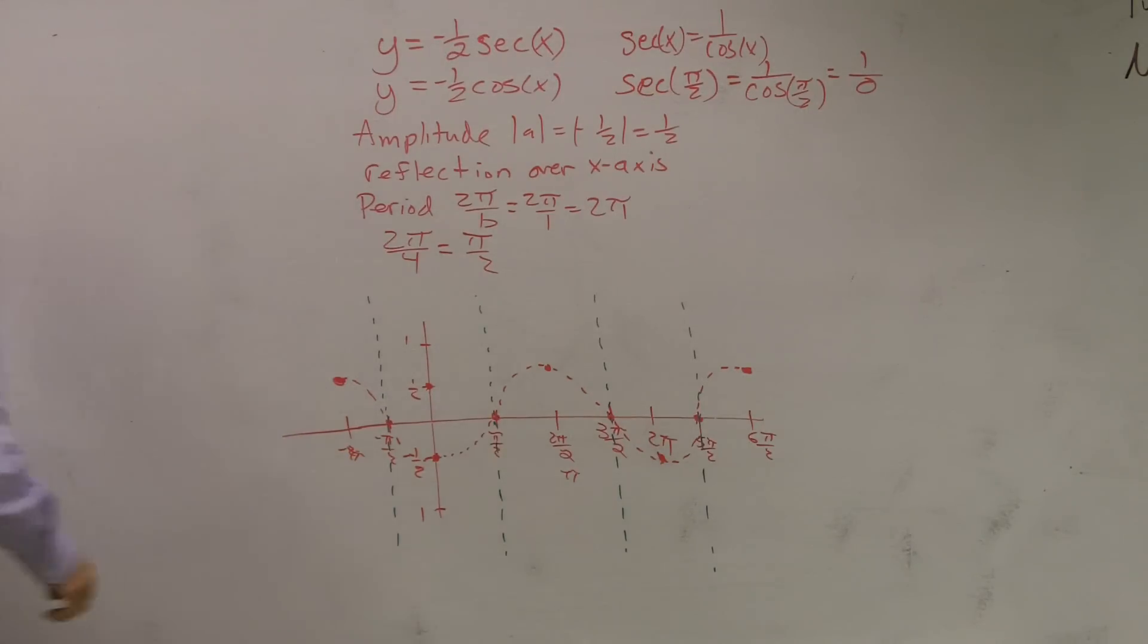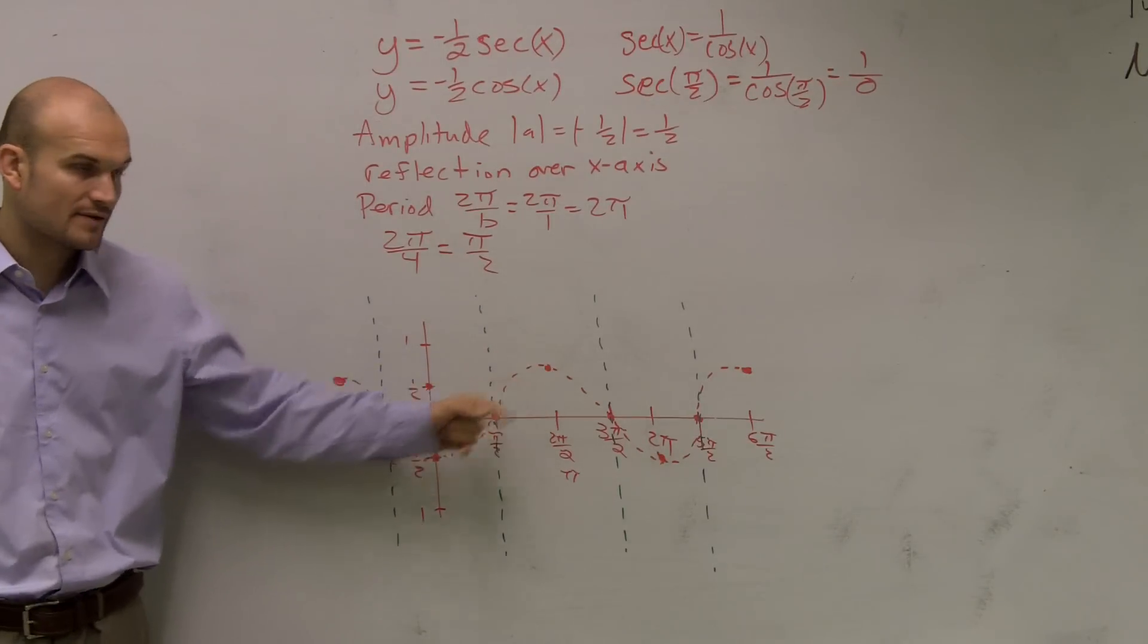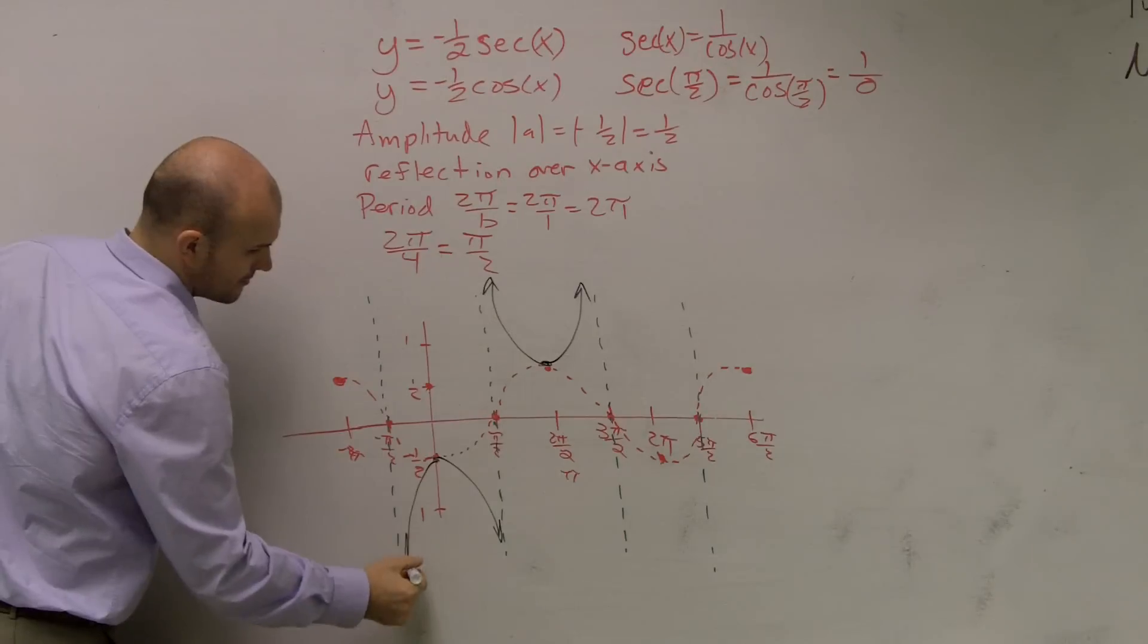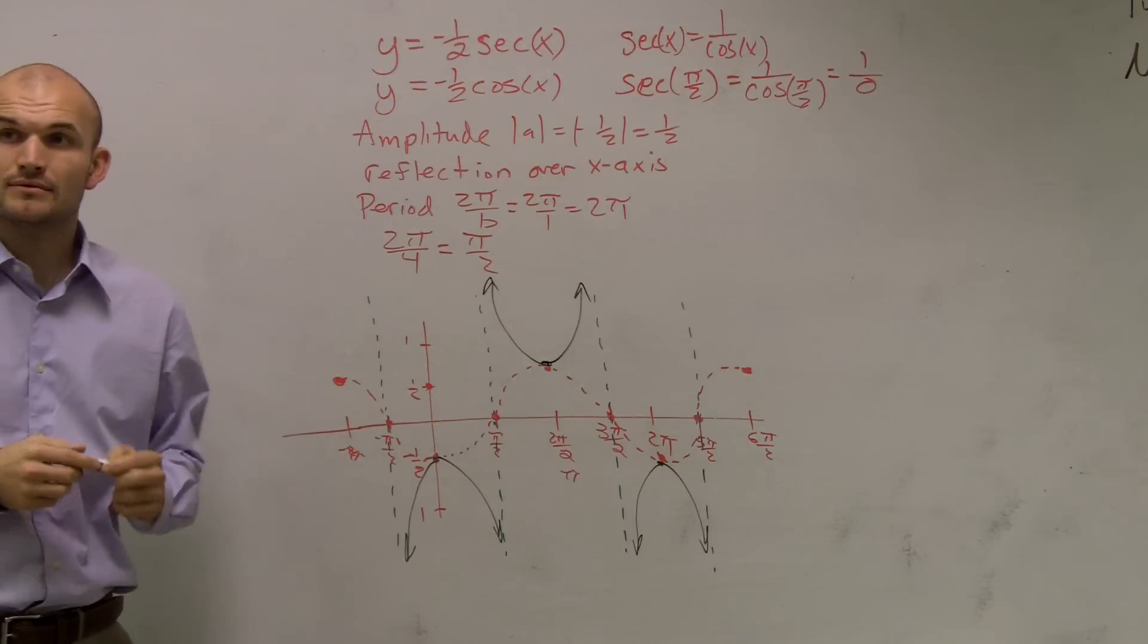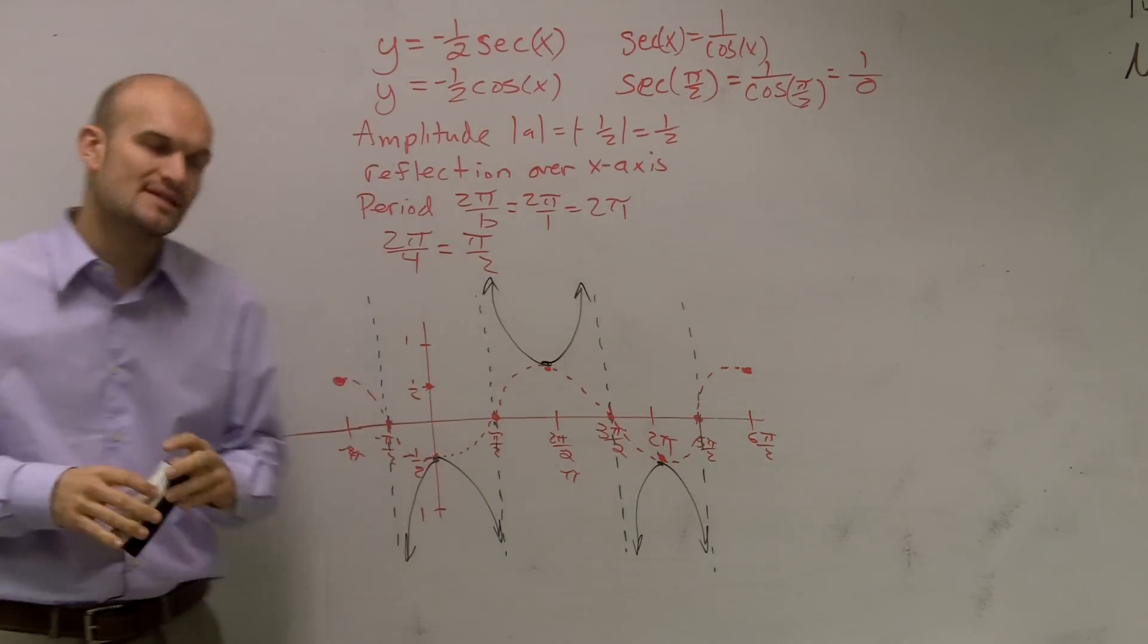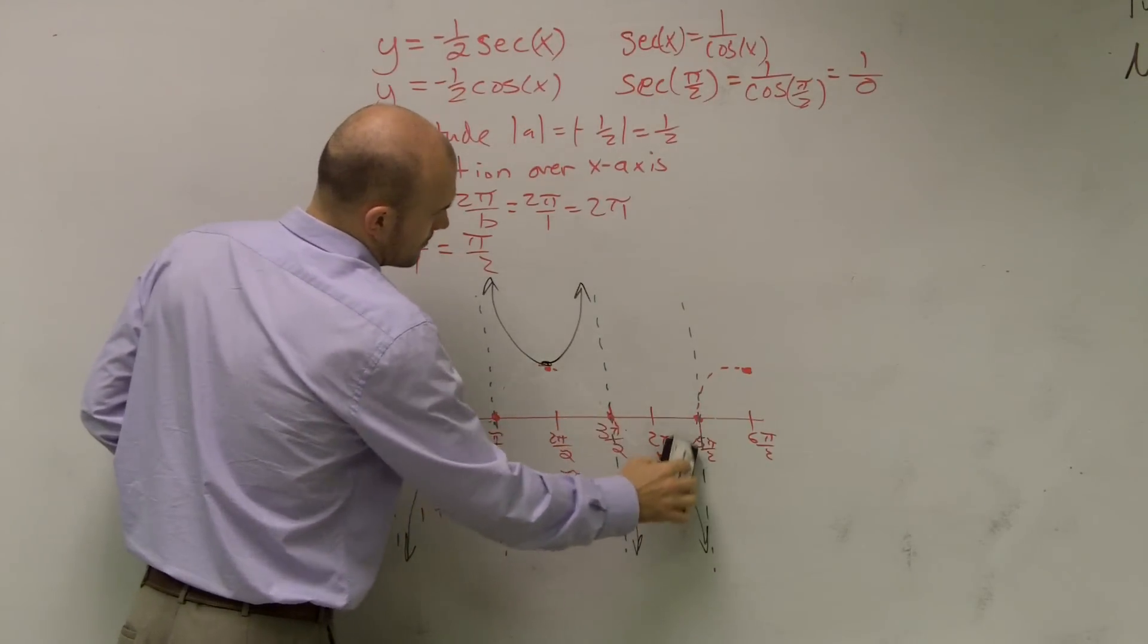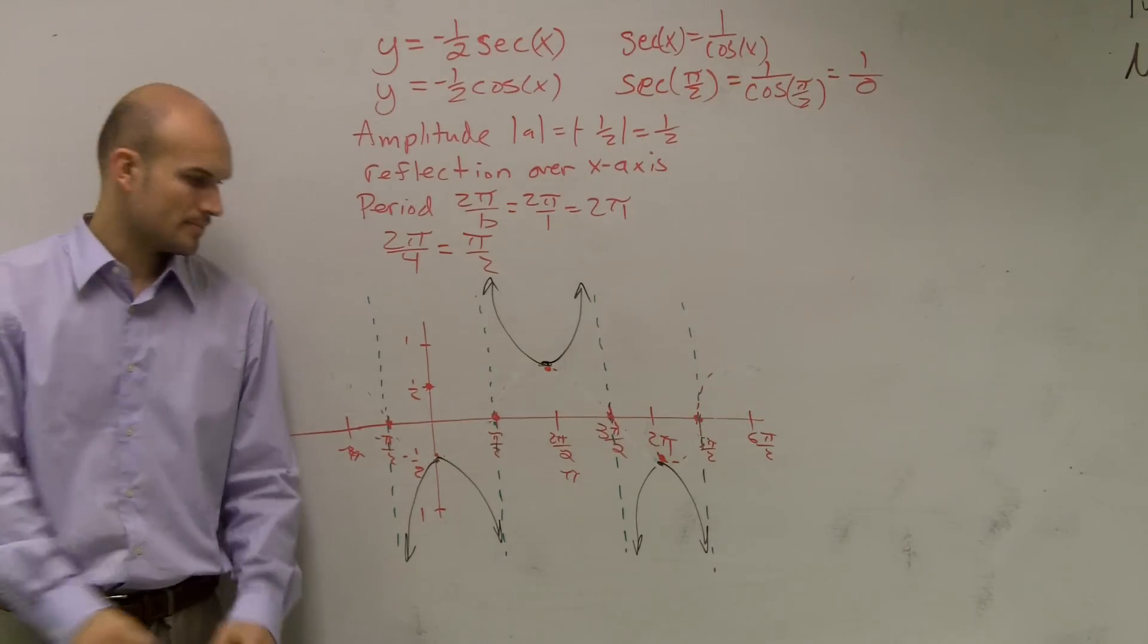To finish off the process, we're going to take our maximum and minimum points of our cosine graph and make a parabola going in the opposite direction. Once I've completed this, I don't need the cosine graph. The cosine graph we just used as an aid. You guys have any questions on that?